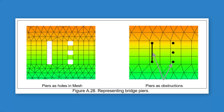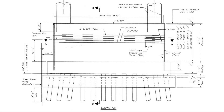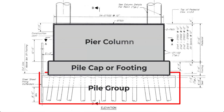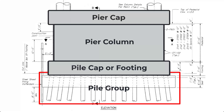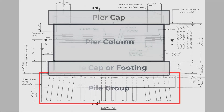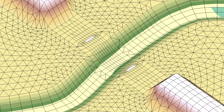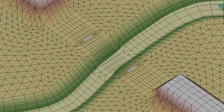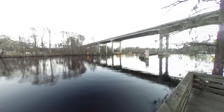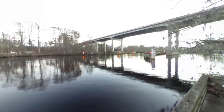Both obstructions and holes can be used to represent complex piers. For complex piers with varying widths, such as in the pile cap, pier, and pier cap, it would typically be represented with an average pier width for the portion of the pier that is in the water for the flow condition being studied. Obstructions are an effective tool to represent complex hydraulic structures such as complex piers or dolphins.